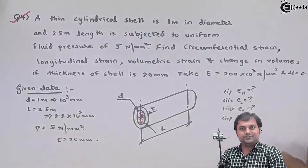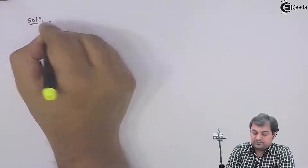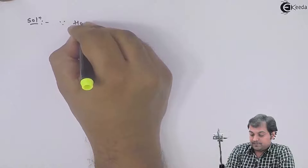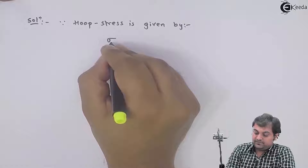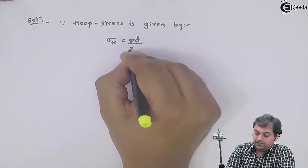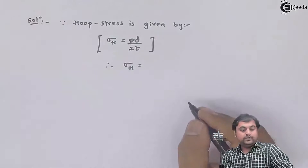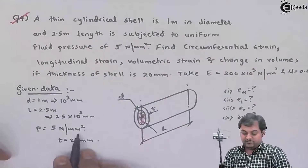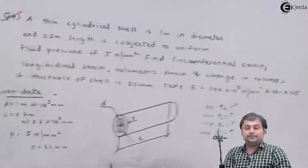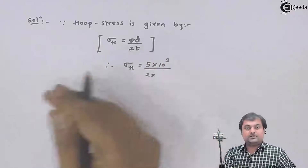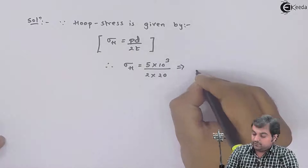In the solution part, since hoop stress is given by sigma_h = pd / 2t, therefore sigma_h = 5 × 1000 / (2 × 20), which gives hoop stress as 1250 newton per mm square.